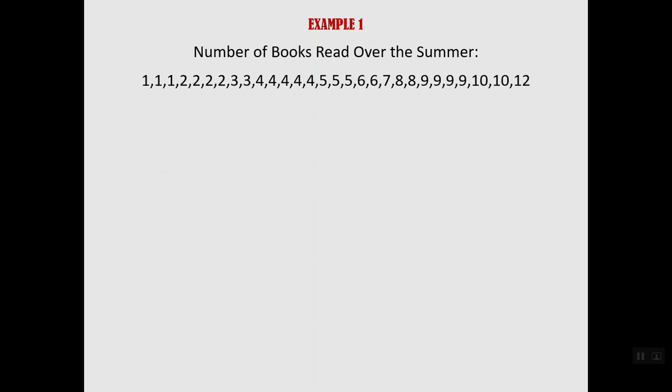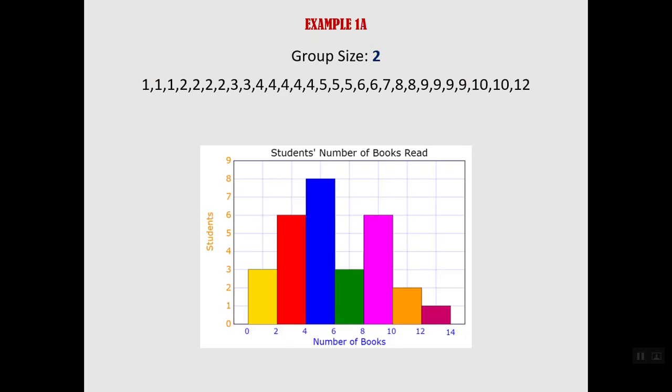So we're going to do an example here. The number of books read over the summer. We polled a bunch of people and found out how many books they read over the summer. And here are all of our data points. We can make a histogram. In this case I decided my group size or bin size is going to be 2. So you can see at the bottom the categories are 0 to 2, 2 to 4, 4 to 6 because there are 2 units within each of those bins or groups.